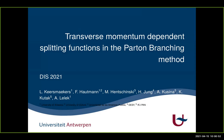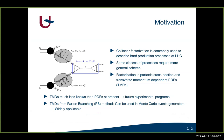I will talk today about transverse momentum dependent splitting functions in the parton branching method. Collinear factorization is commonly used to describe processes at the LHC, but there are some classes of processes that require a more general scheme. This can be done through factorization in off-shell cross-sections and transverse momentum dependent PDFs, or TMDs. These TMDs are currently much less known than collinear PDFs, but they are very important for future experimental programs.